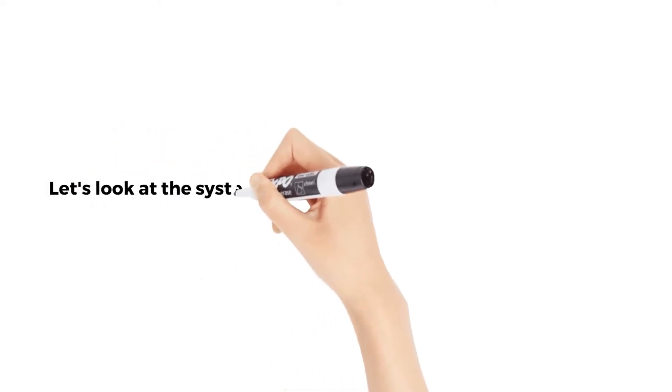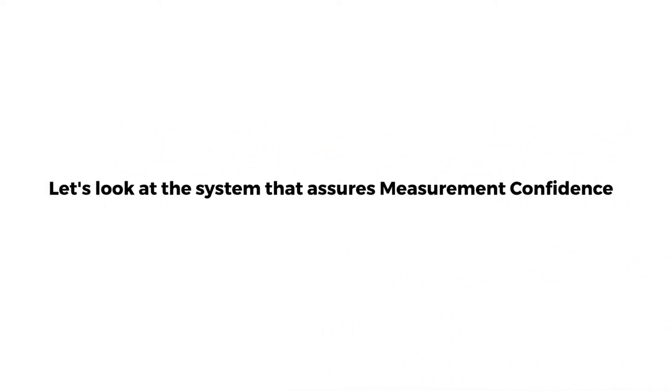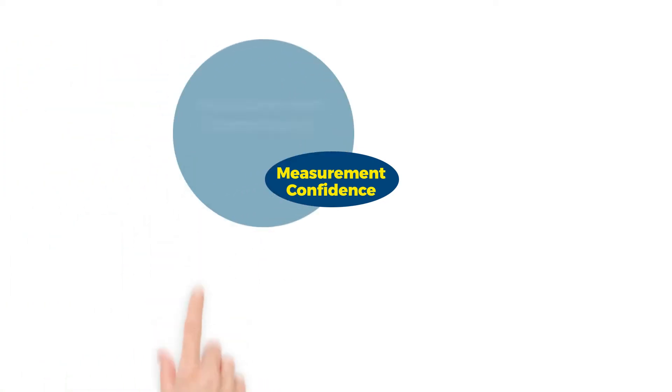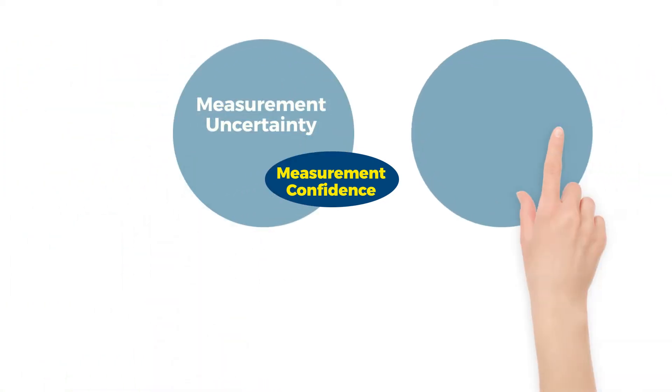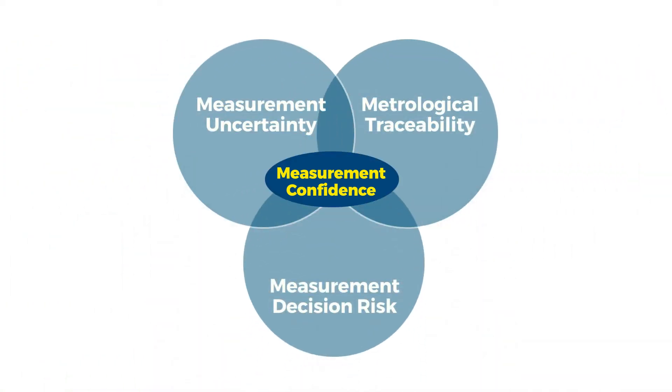Let's look at the system that ensures measurement confidence. Establishing measurement confidence requires measurement uncertainty, metrological traceability, and measurement decision risk.